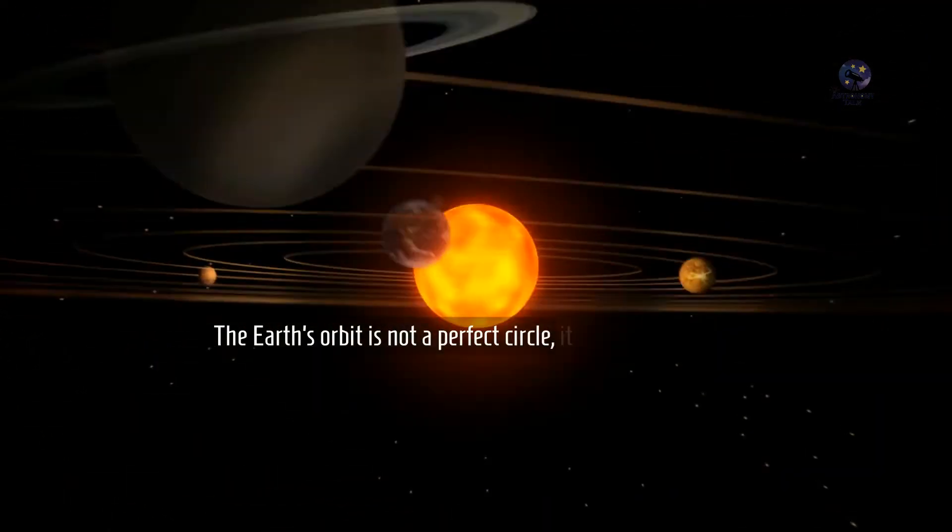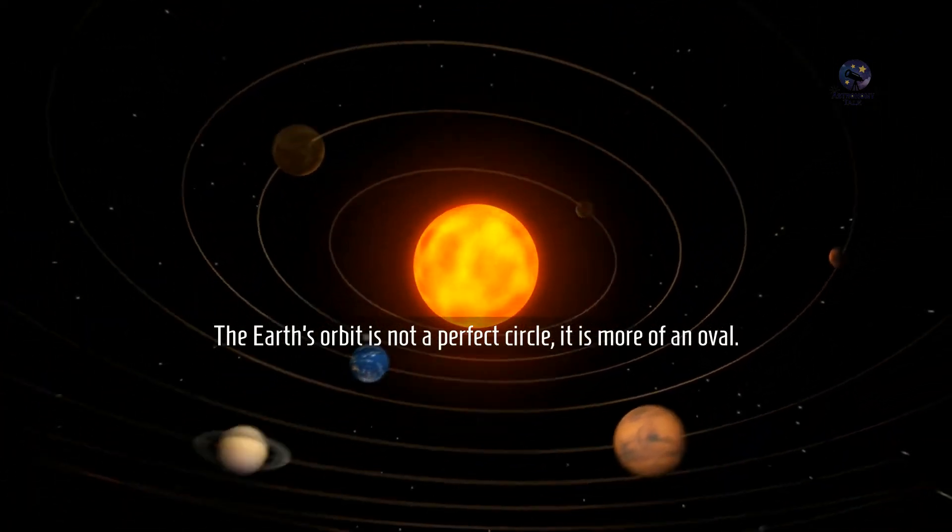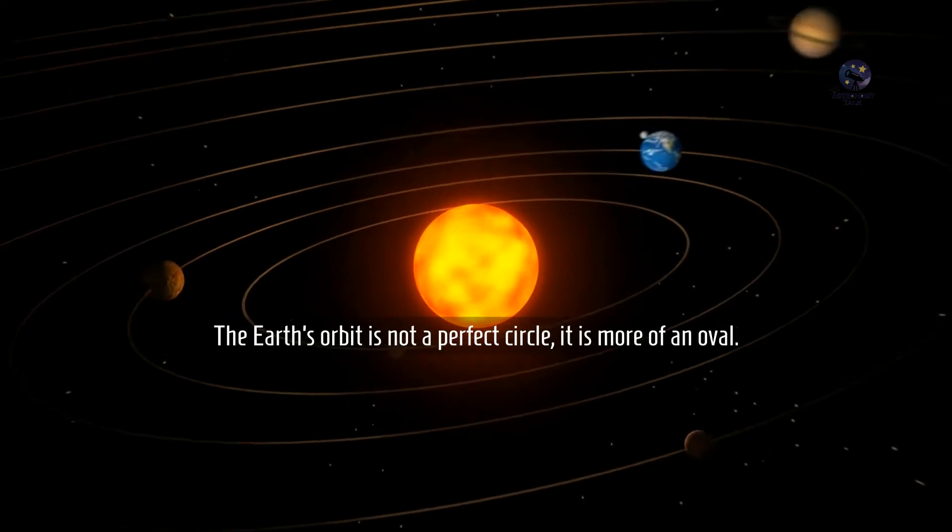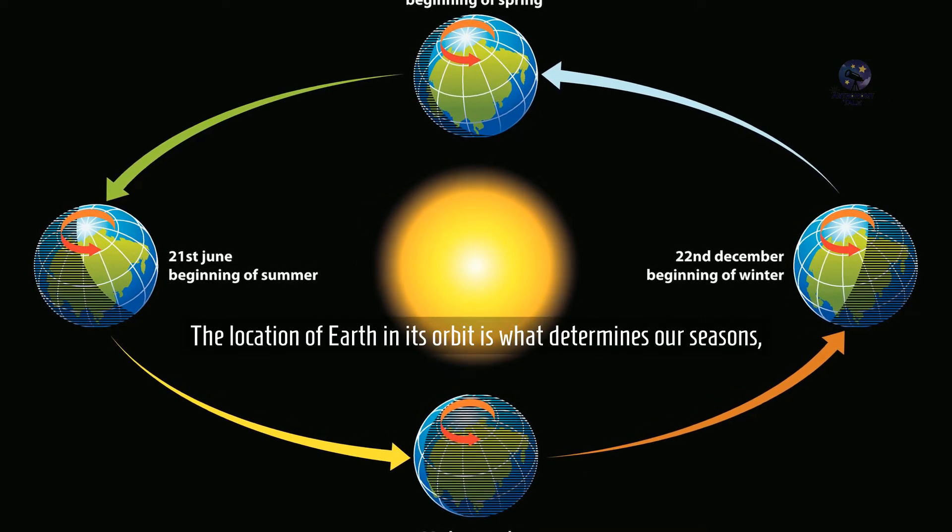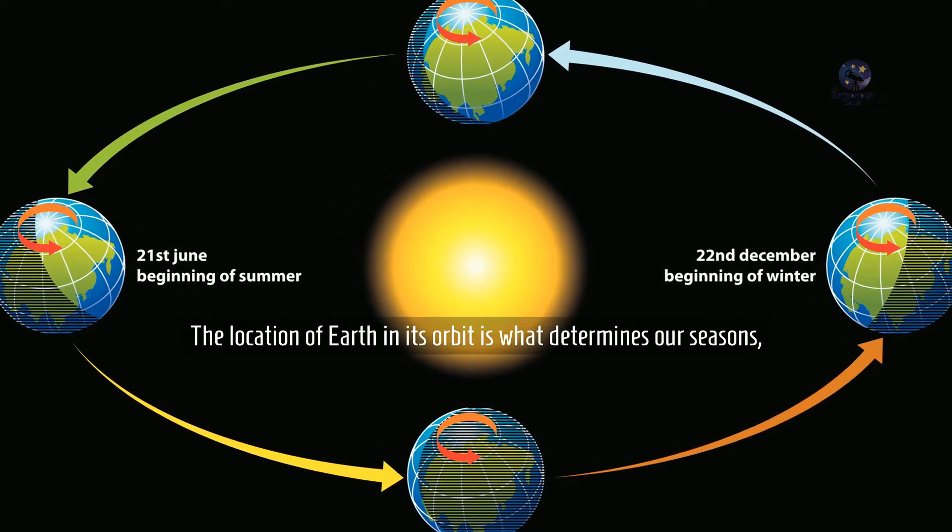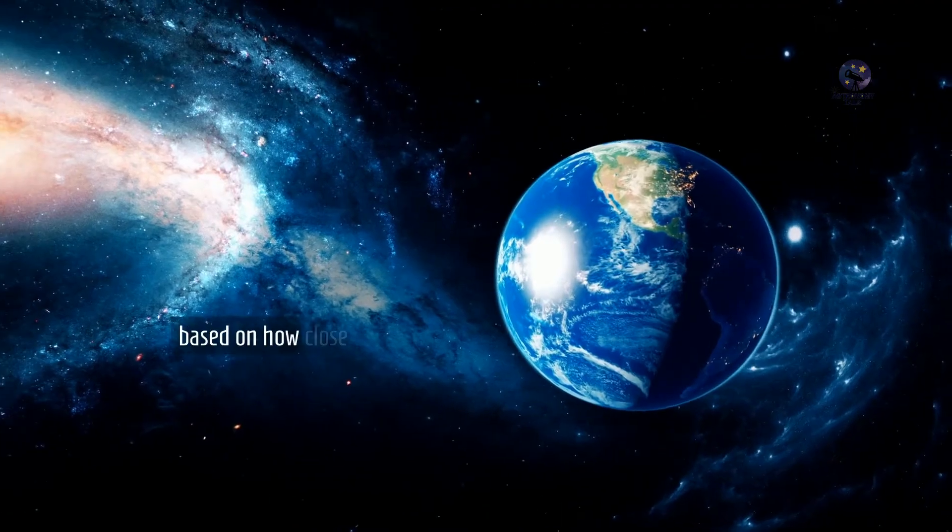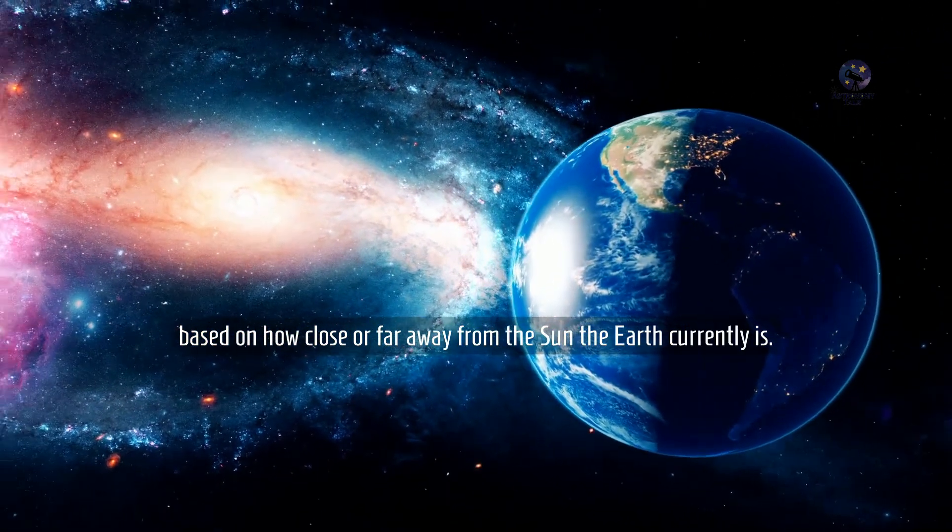The Earth's orbit is not a perfect circle, it is more of an oval. The location of Earth in its orbit is what determines our seasons, based on how close or far away from the sun the Earth currently is.